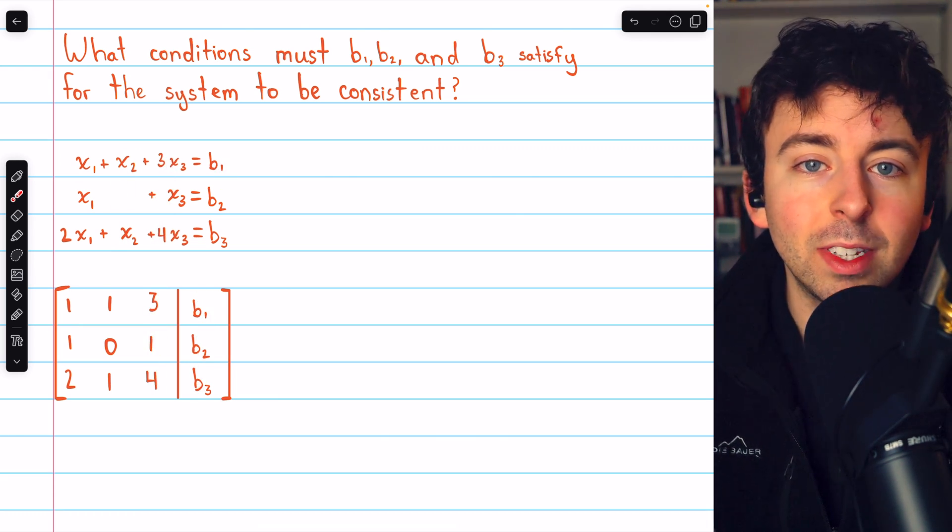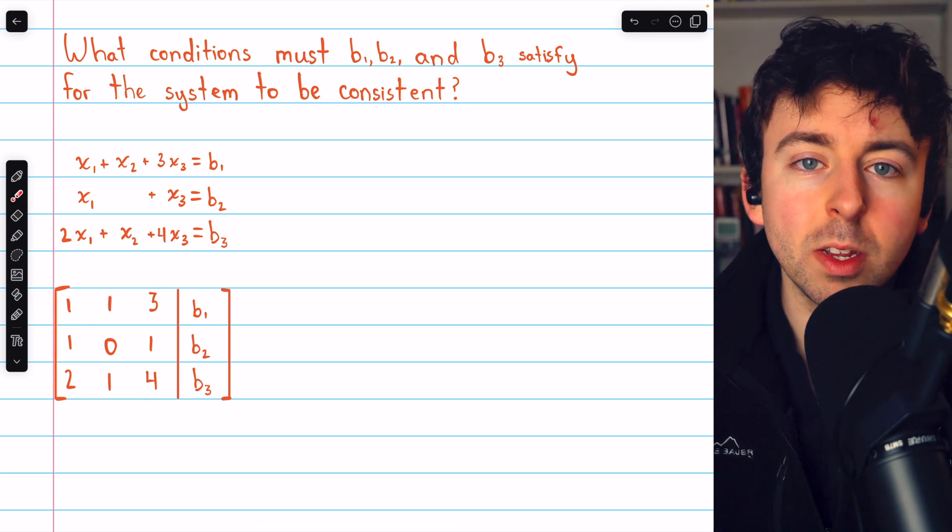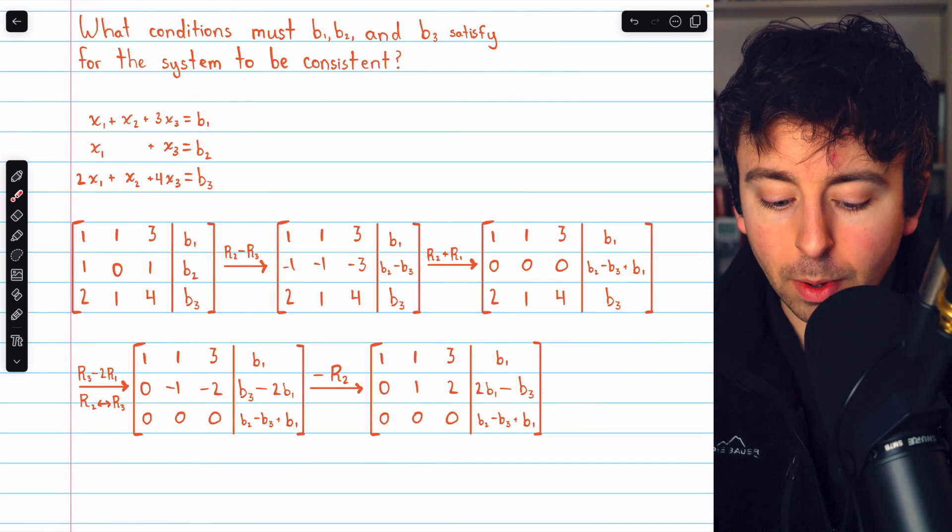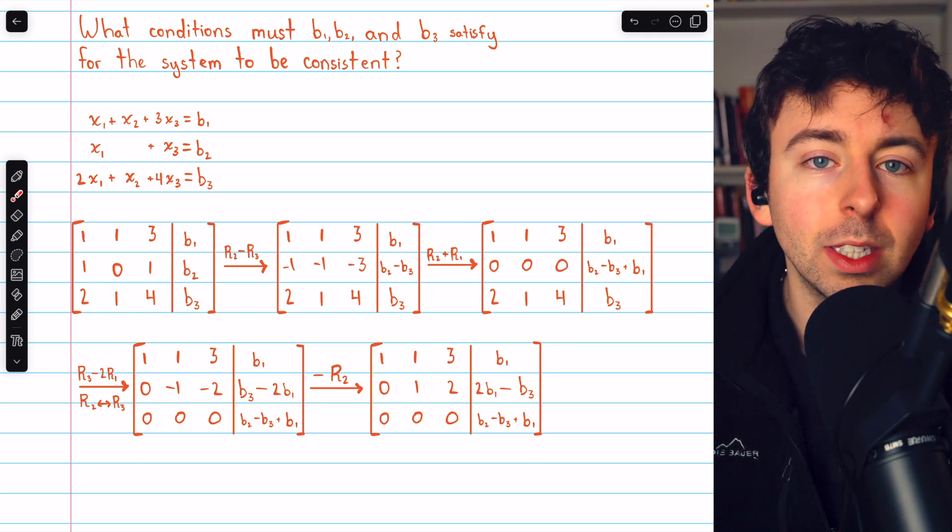Now we'll perform Gaussian elimination in order to reduce this matrix. Link in the description to my lesson on Gaussian elimination. I'll walk you through it here quickly. Traditionally, you might begin by subtracting row 1 from row 2 and two copies of row 1 from row 3 to get zeros below the leading one.